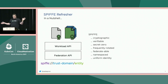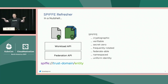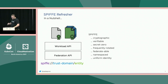In a nutshell, what you get with SPIFFE is cryptographic, verifiable, secret-zero, federatable, frequently rotated, uniform identity. That's the crux — that's what SPIFFE is giving you. And that's what we're going to leverage today to do our cross-cluster authentication.